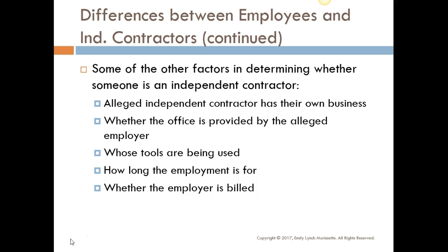Other factors in determining whether someone is an employee or independent contractor: Do you have your own separate business? Do you have a separate office? Whose tools are being used? How long is the employment for? And whether the employer is billed. For example, my employment is a year contract hopefully renewed each year, I use a work computer, and I don't bill Southwestern College — so I'm probably an employee, not an independent contractor.